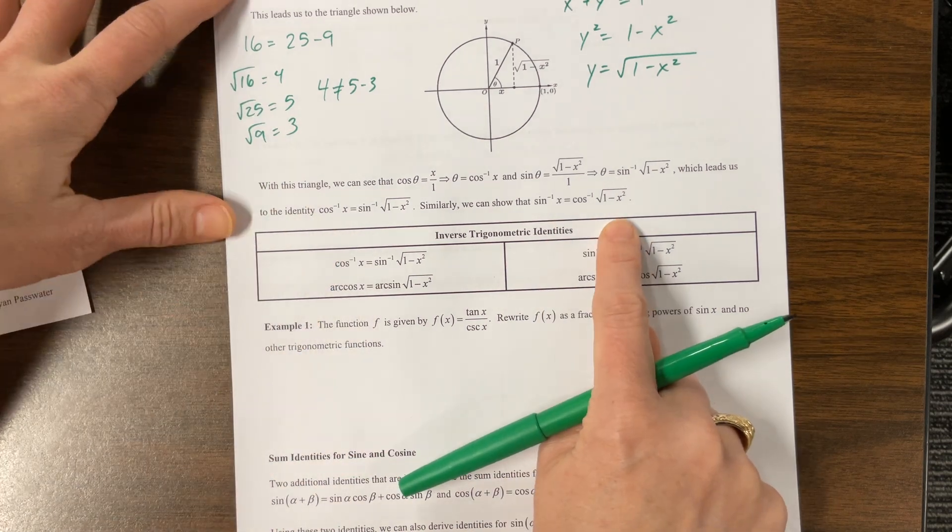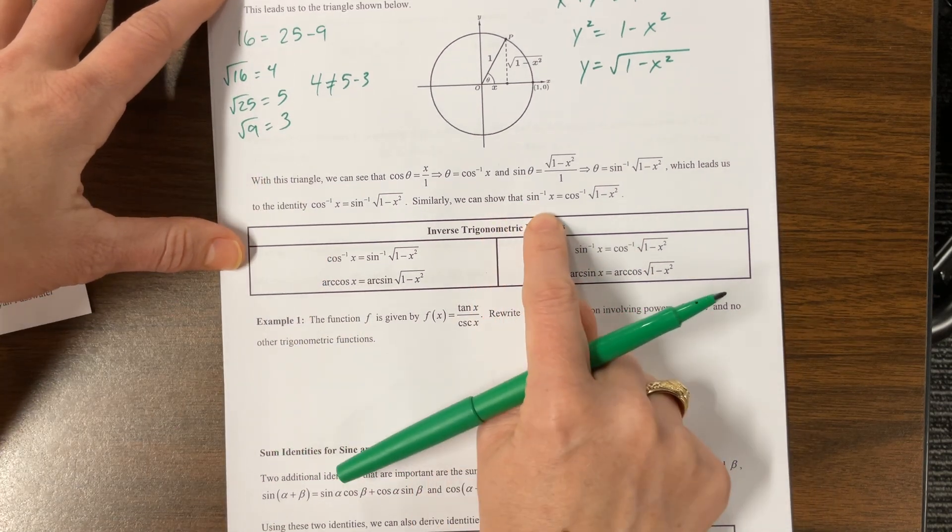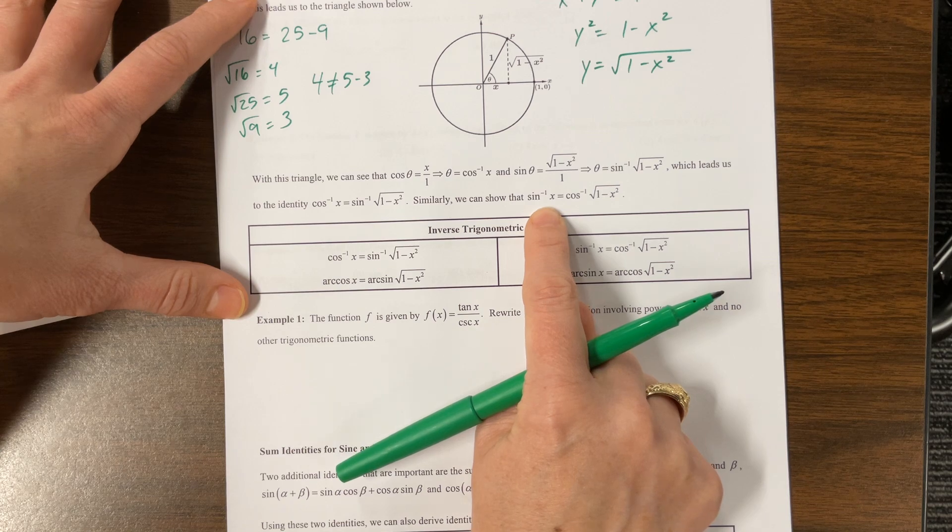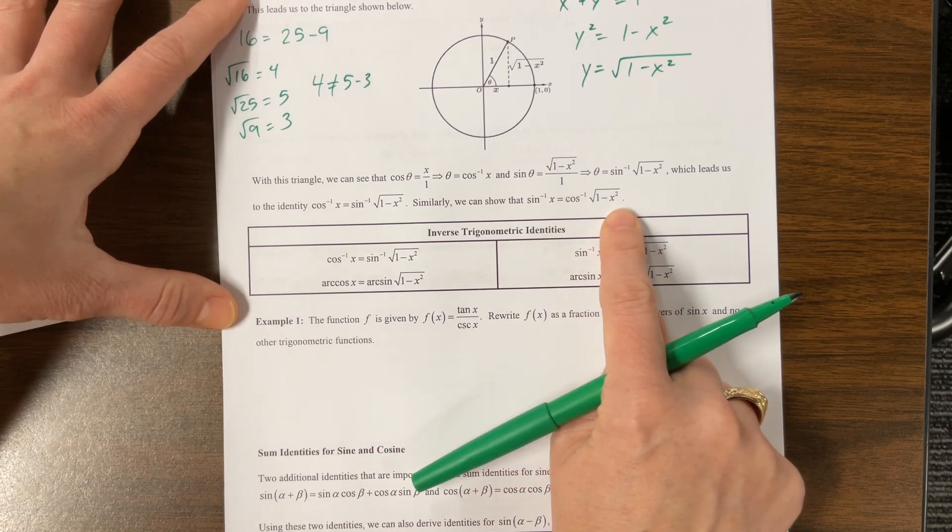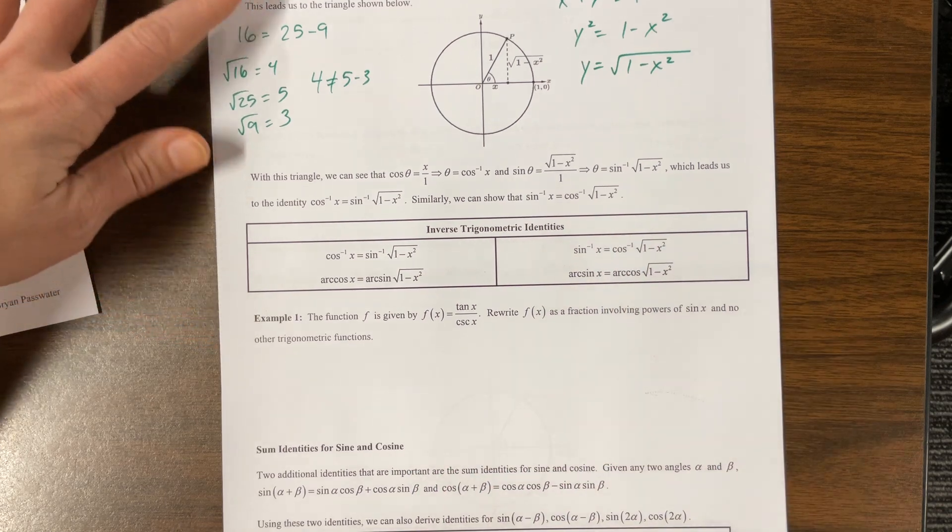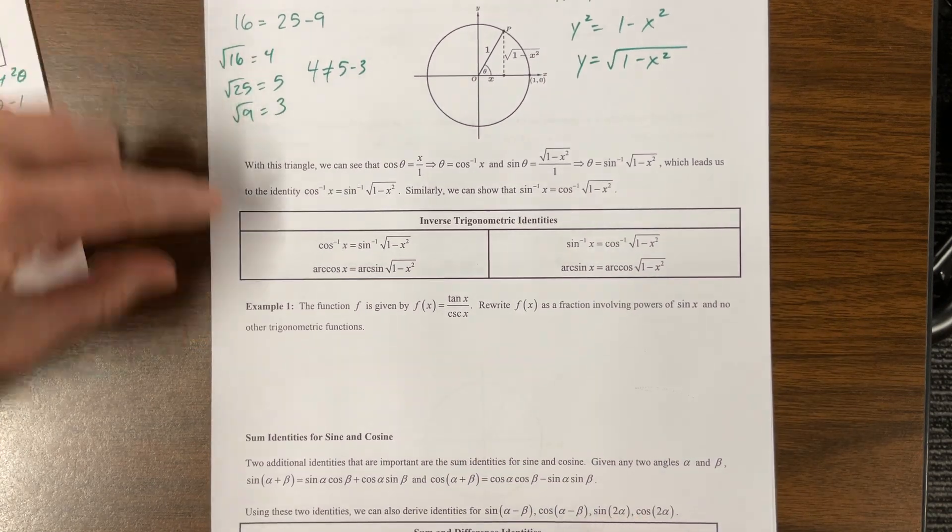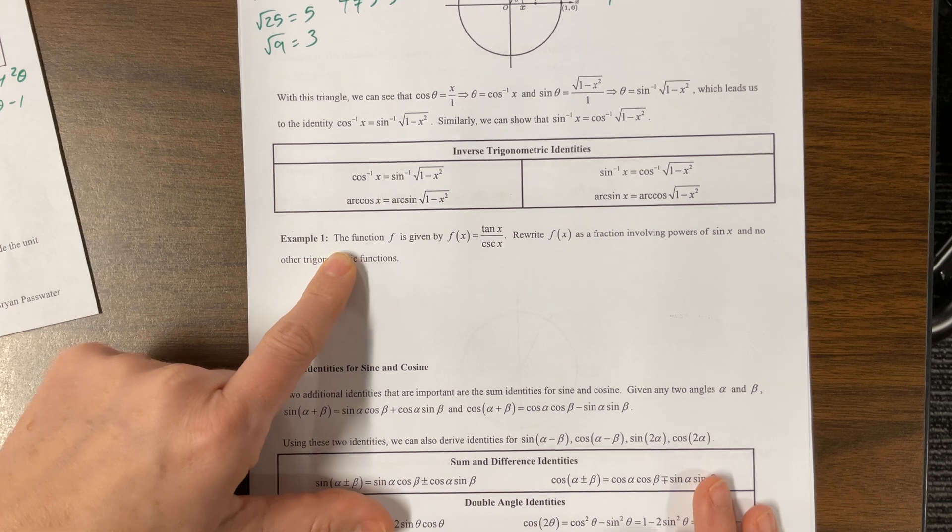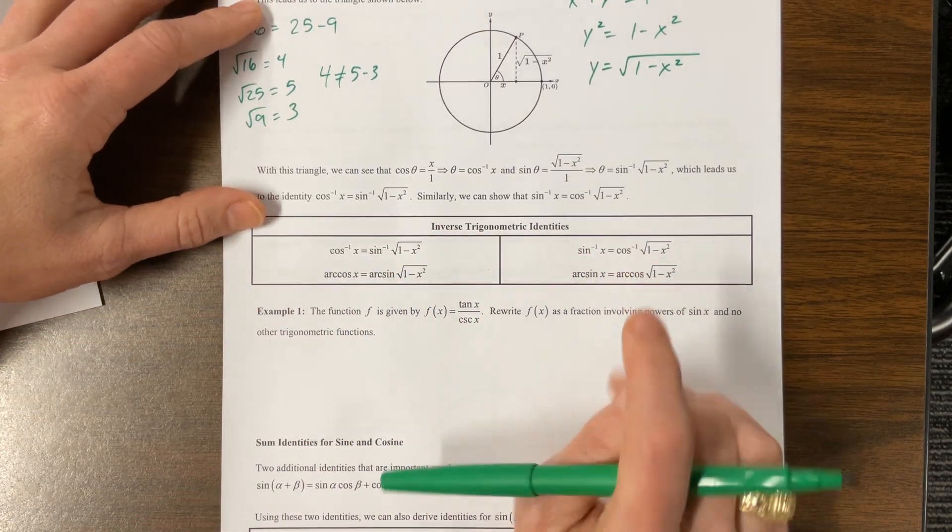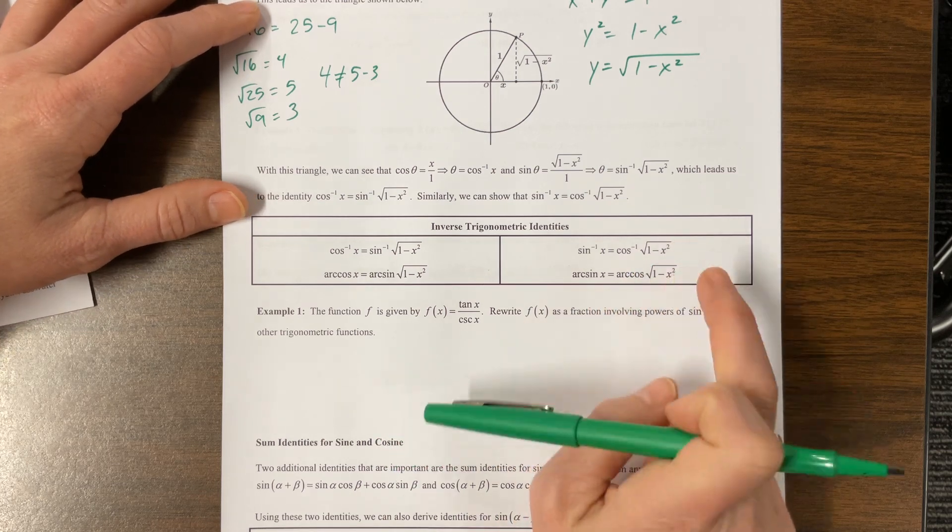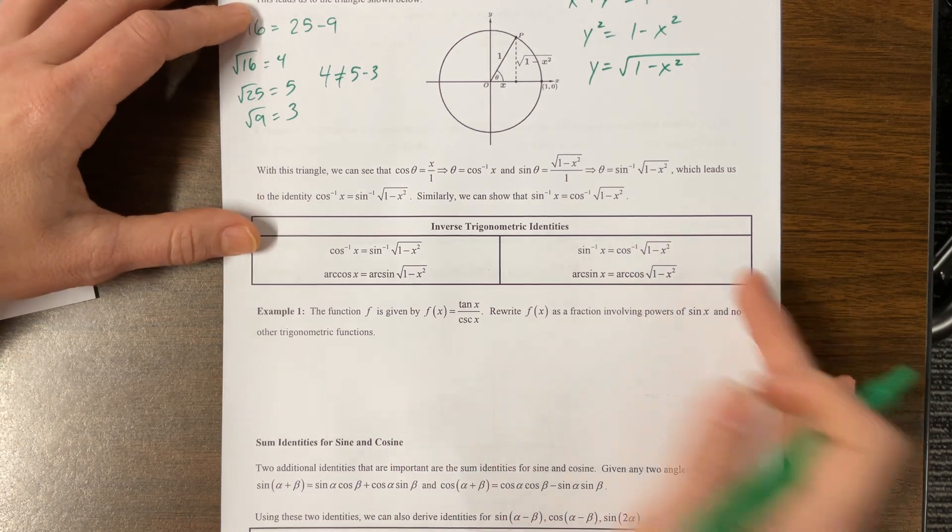Okay, and then we can also say, we can show that the sine, inverse sine or arc sine of x would be equal to arc cosine of square root of 1 minus x squared. I think I need to practice these a little bit more and use them with my kids because I think they show up a lot more in calculus, but it's been too many years since I've taught calculus.